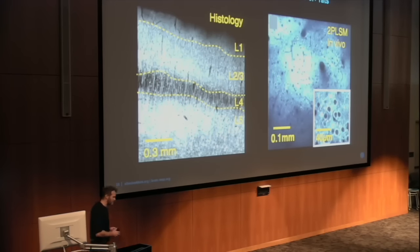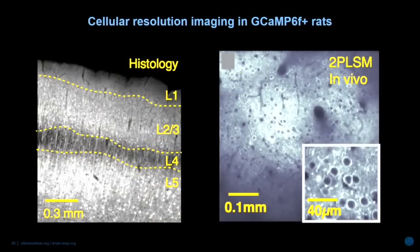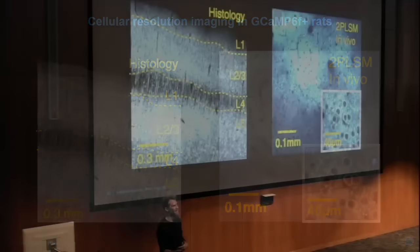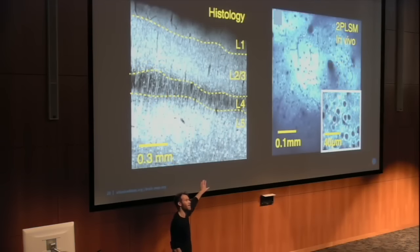Another interesting feature of these transgenic strains is that not only are they useful for wide-field single-photon imaging, but expression is also high enough to zoom in and do cellular-resolution two-photon imaging. That's useful because the pipeline of these experiments is to identify brain regions active at specific times during the task, and then zoom in with our voluntary head restraint system to record at cellular resolution during task performance.